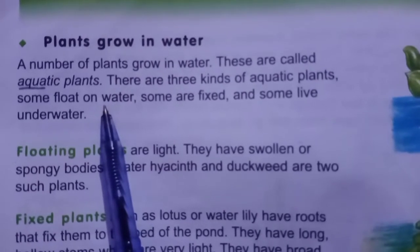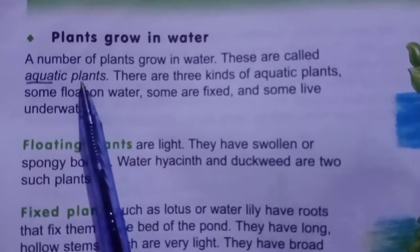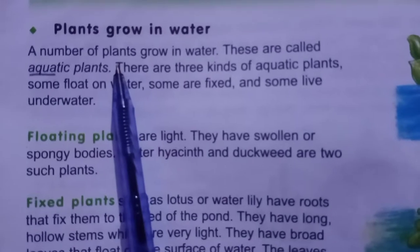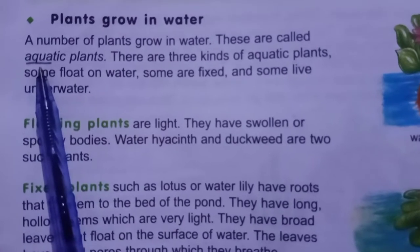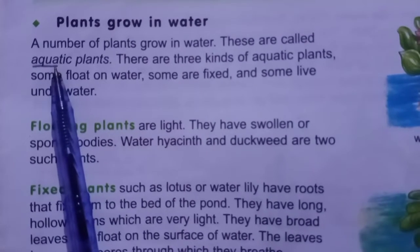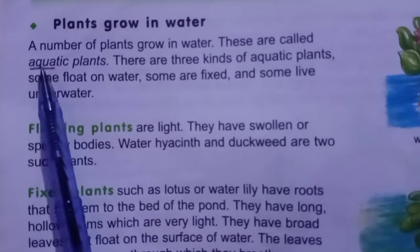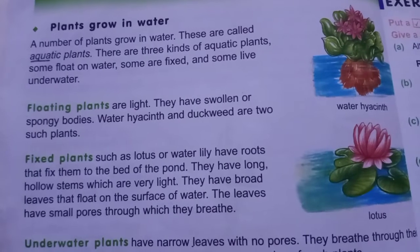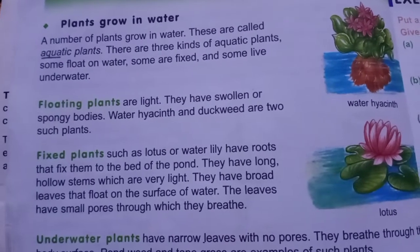Plants grow in water. Now I'm telling you about aquatic plants. A number of plants grow in water — these are called aquatic plants. Aqua means water, and aquatic means existing and happening in water. بہت سارے plants پانی کے اندر یا پانی پر grow کرتے ہیں — ایسے plants aquatic plants کہلاتے ہیں۔ Many plants grow in ponds, lakes and other water bodies. There are three kinds of aquatic plants.